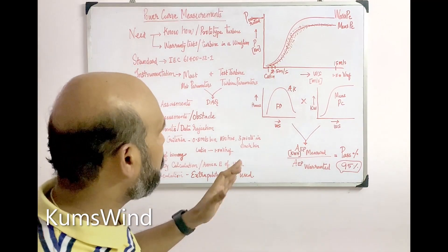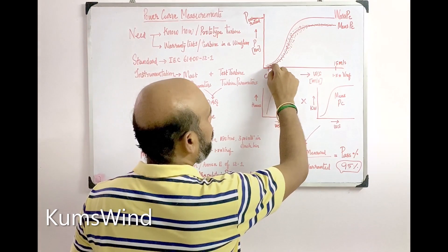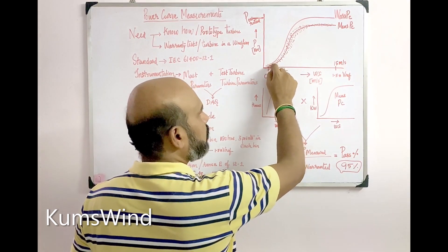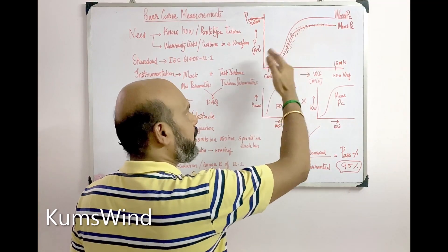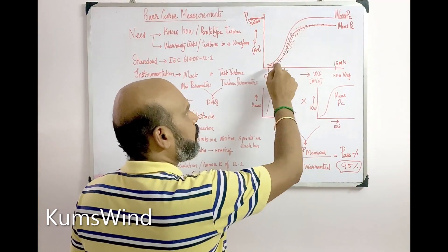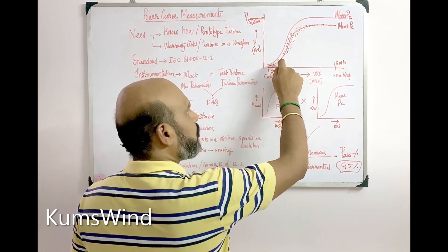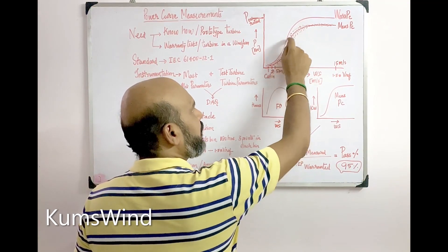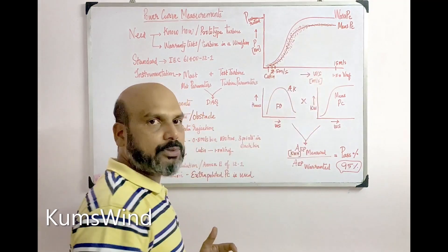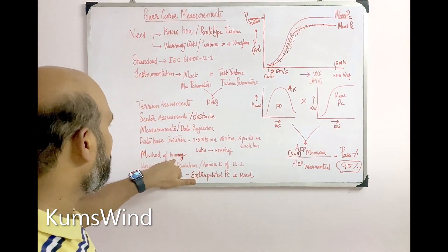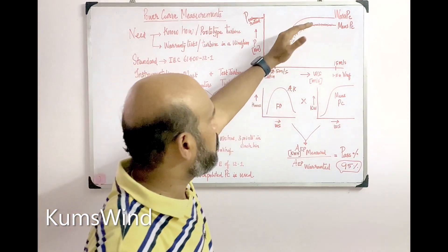The method of binning is similar to an averaging process. For every bin you calculate an average point — you should have a minimum of three data points per bin, but you can have any number more than three. All these average points are joined together to finally produce the binned power curve. This process is explained in the 'Method of Binning' section of the standard.